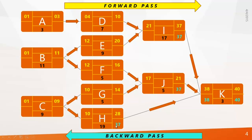Calculate the late start for I: 37 minus 17 plus 1 makes 21. For J: 37 minus 5 plus 1 makes 33. For H: 37 minus 19 plus 1 makes 19.